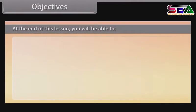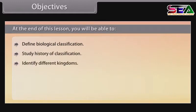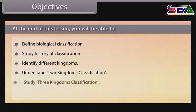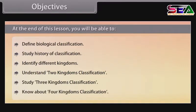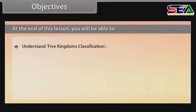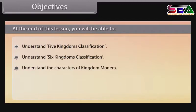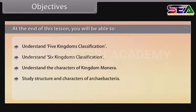Objectives. At the end of this lesson, you will be able to: define biological classification; study the history of classification; identify different kingdoms; understand two kingdoms classification; study three kingdoms classification; know about four kingdoms classification; understand five kingdoms classification; understand six kingdoms classification; understand the characters of kingdom Monera; study structure and characters of Archaebacteria; and study structure and characters of Eubacteria.